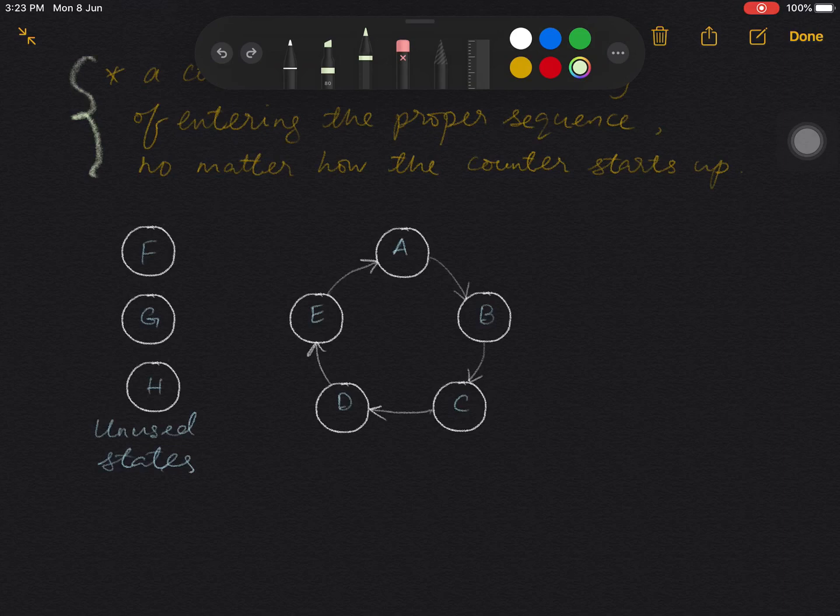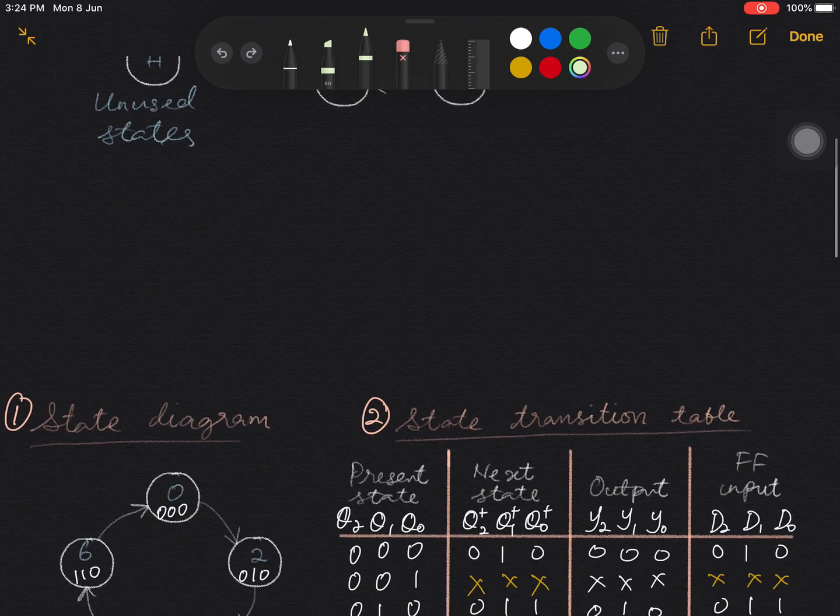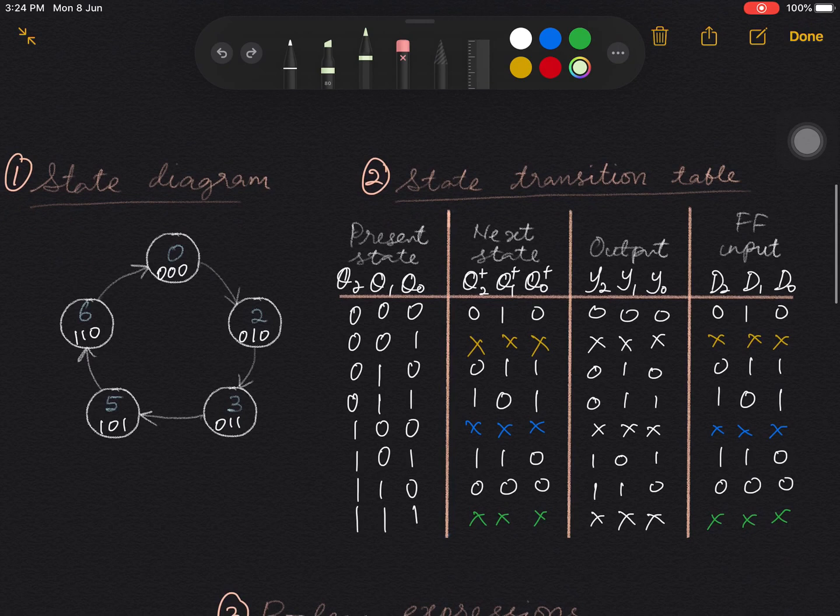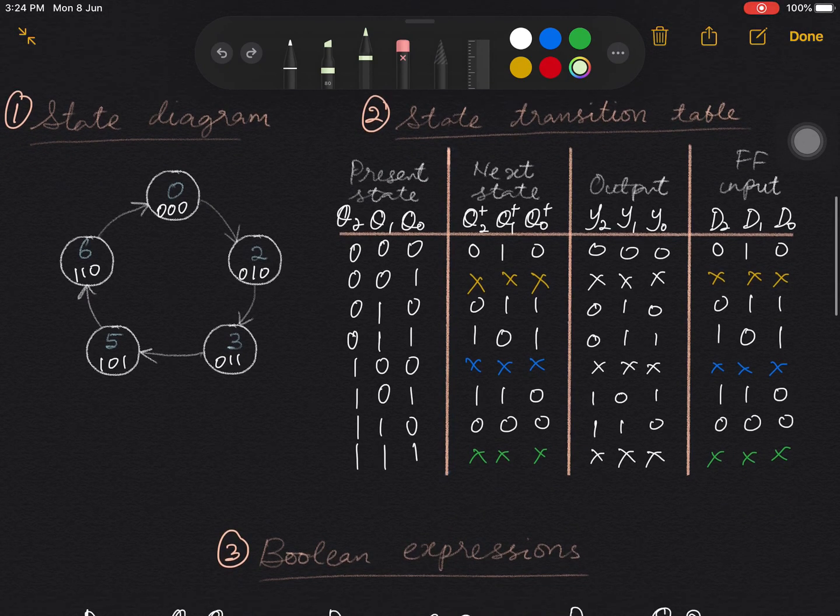But what if the initial state is one of the unused states? How to ensure that it will eventually transition to the used states and enter the correct sequence? The answer is, this can be done by doing a so-called reverse engineering technique. For that purpose, I repost the same problem from the previous video, namely the counter with irregular sequence.